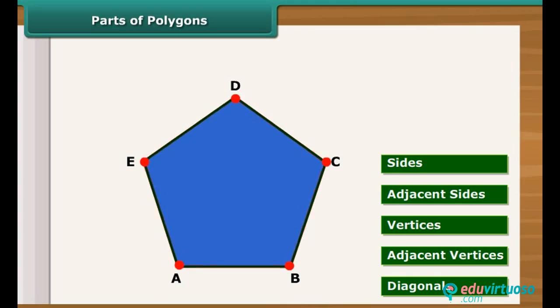The end points of the same side of polygons are called adjacent vertices. For example, A and B, B and C, C and D, D and E, E and A are adjacent vertices.